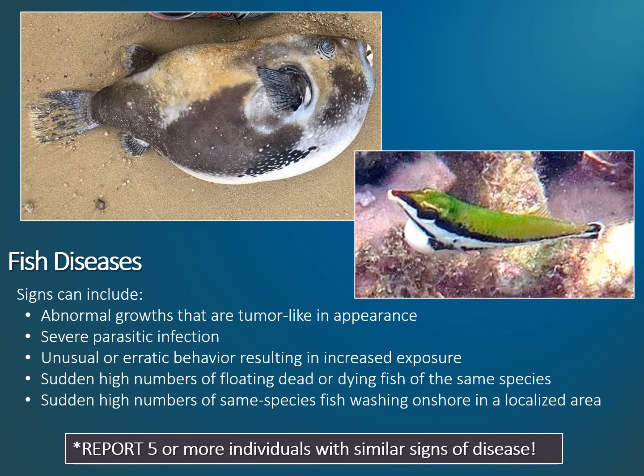Although not commonly observed, fish disease occurs occasionally in the Hawaiian Islands. Signs of possible fish disease can include: (1) abnormal growths that are tumor-like in appearance, (2) severe parasitic infections on the skin or fins, (3) unusual or erratic behavior resulting in increased exposure, (4) sudden high numbers of floating, dead, or dying fish of the same species, or (5) sudden high numbers of same-species fish washing on shore in a localized area. Remember that a fish can die of natural causes and injuries due to fishing are common in some areas. Please only report fish disease to the Eyes of the Reef Network if more than 5 individuals of the same species are showing similar signs of disease at your reef site.